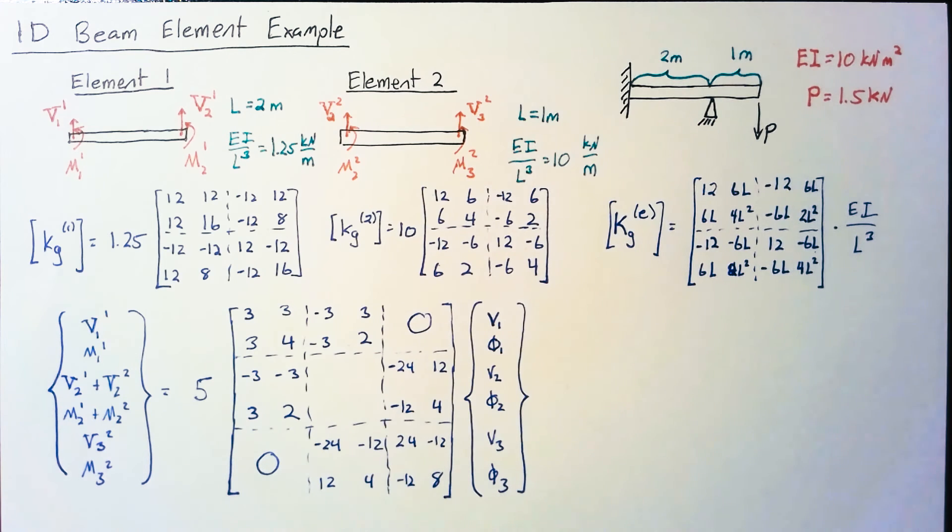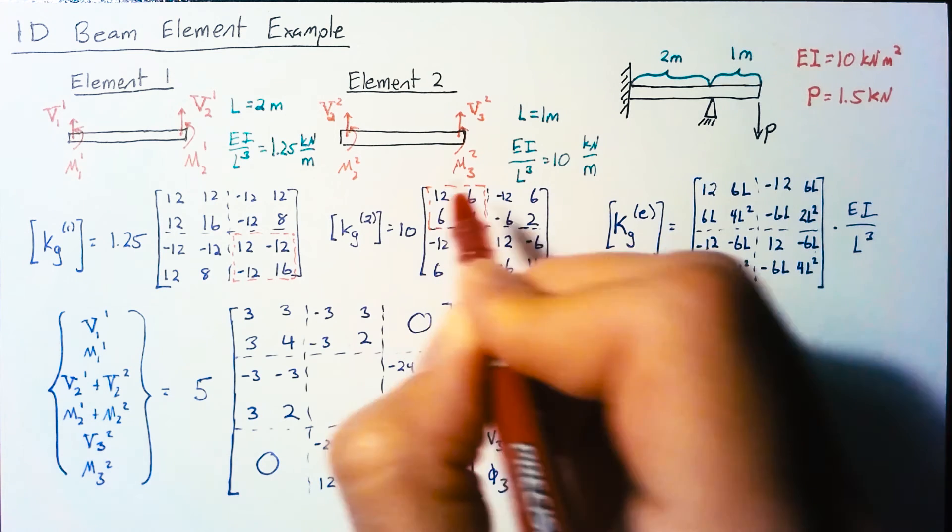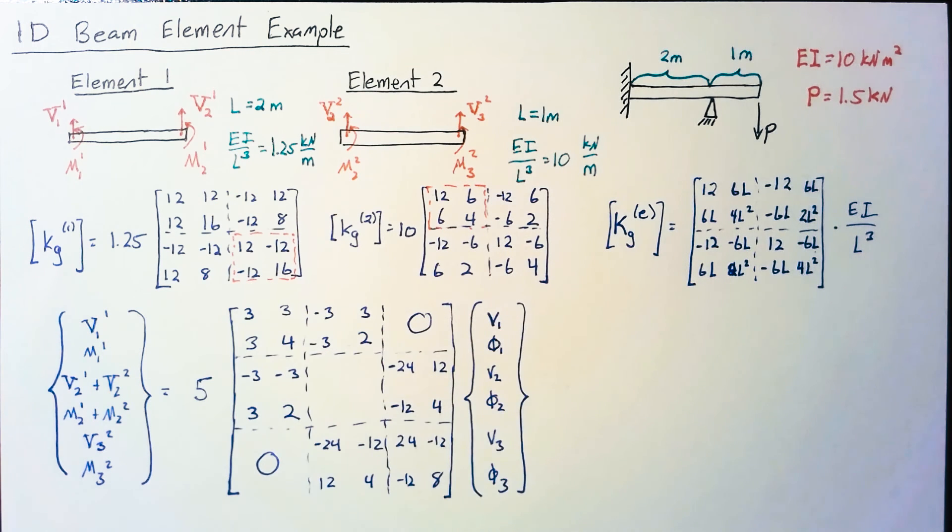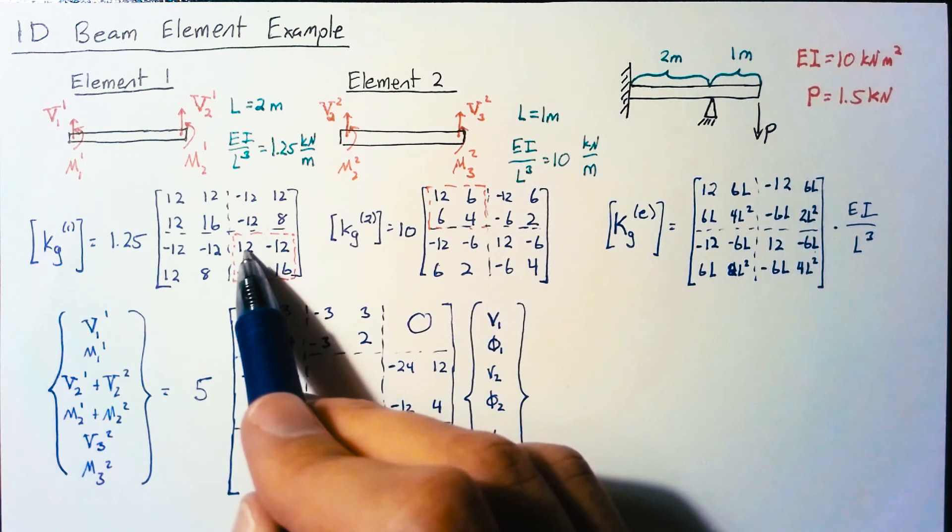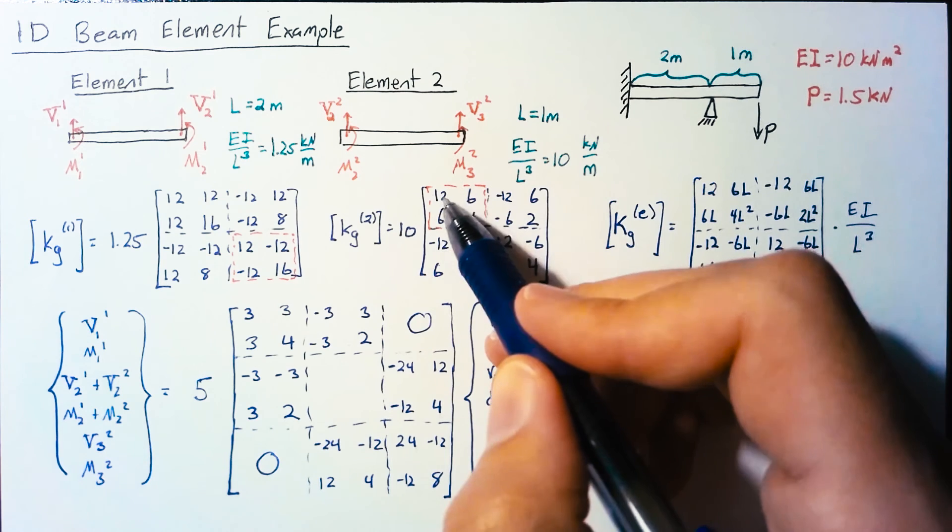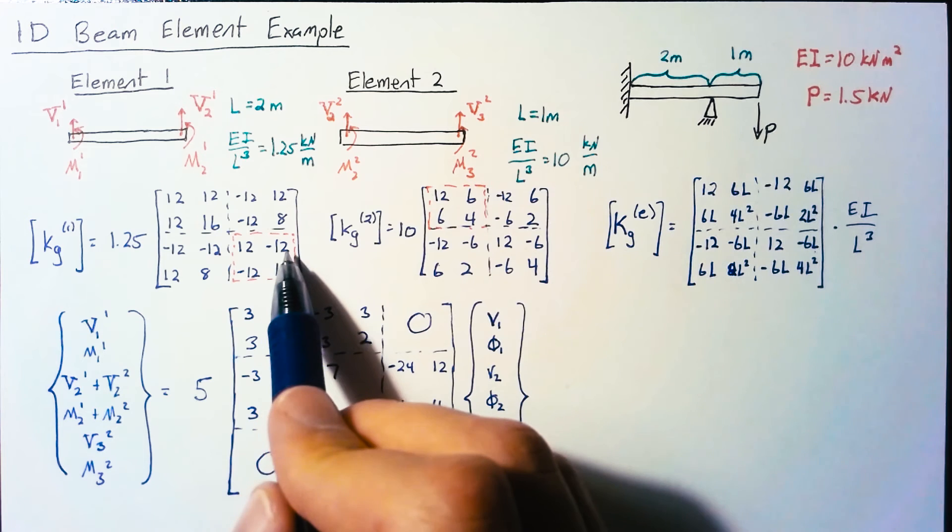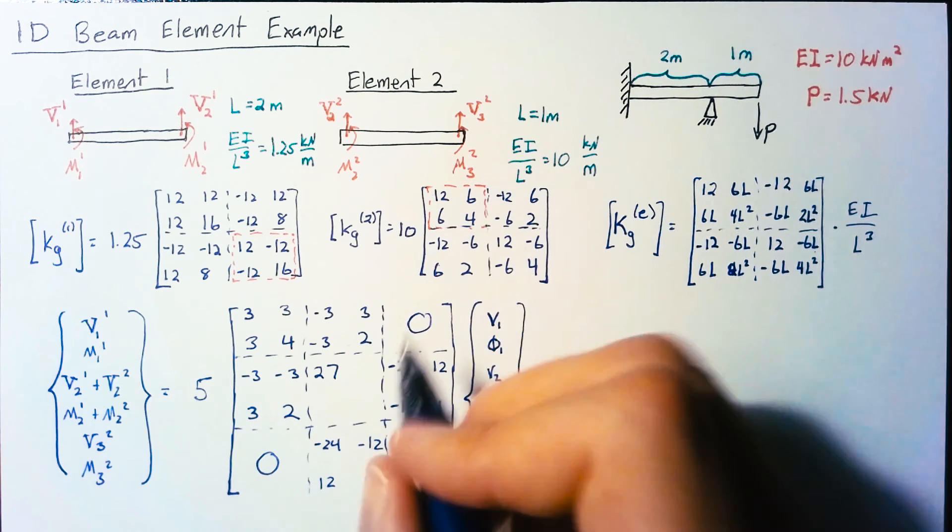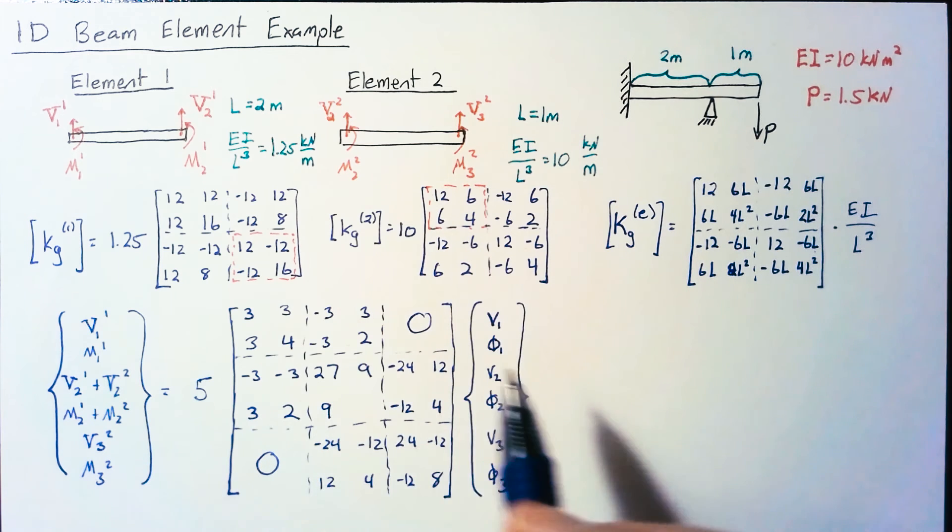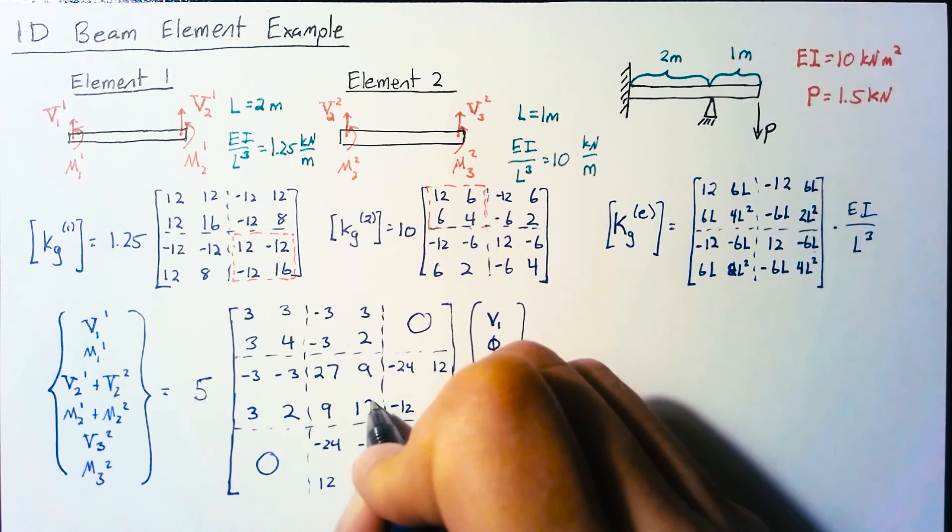I left the middle matrix for last because we need to account for both matrices. Top left: from element 1 we get 3, from element 2 we get 24, total is 27. Next we get -3 plus 12 which is 9, same for bottom left. Finally 4 plus 8 gives us 12.